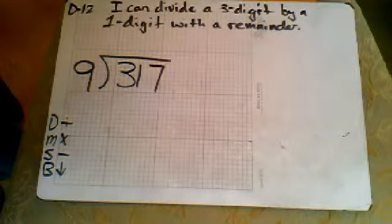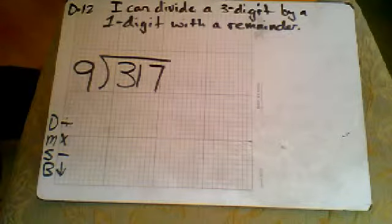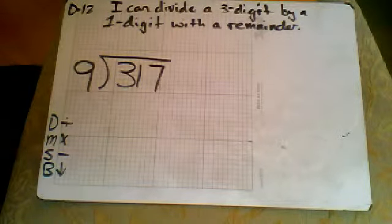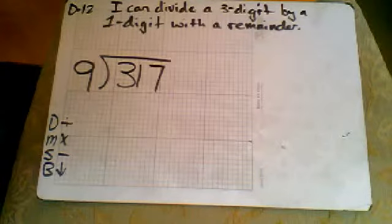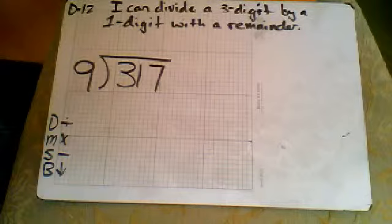Hey folks, this is Mr. Walsh here, and we are on target D12. That says I can divide a three-digit by a one-digit with a remainder this time. So let's jump right in here.